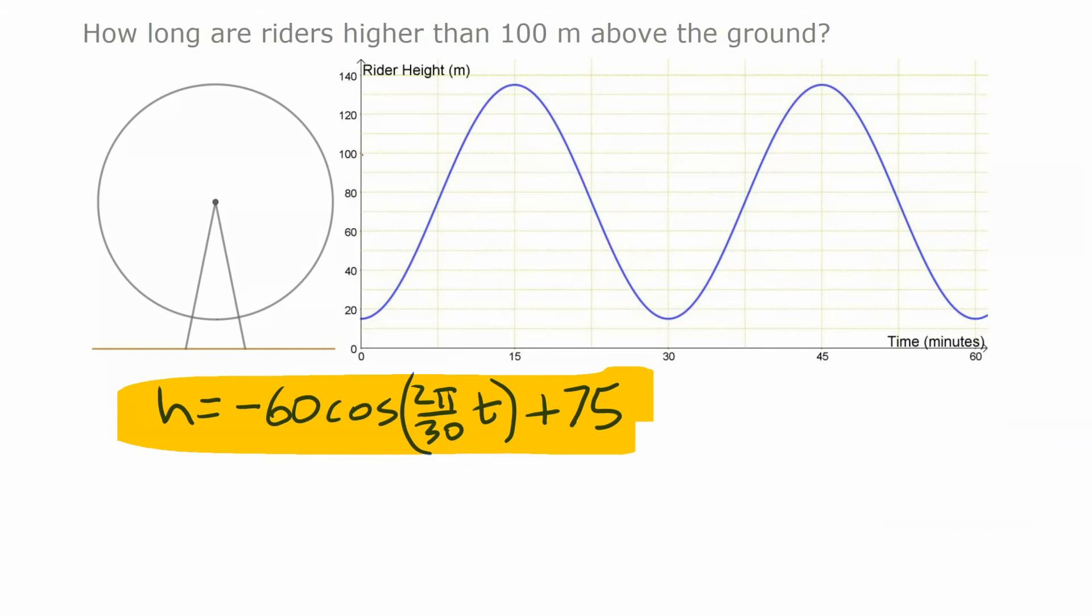Now here we're asked to find out how long riders are higher than 100 meters above the ground. And this is actually the reverse of what we just did in the previous part. Previous part, we were given a time of 12 minutes, and we were asked to find the height that goes with that. So essentially, find a y value given an x value, or in this case, h from t. Now we're asked the reverse of that. We're given a y value, or in this case, an h value, and we're asked to find what x value, or t value, goes with that.